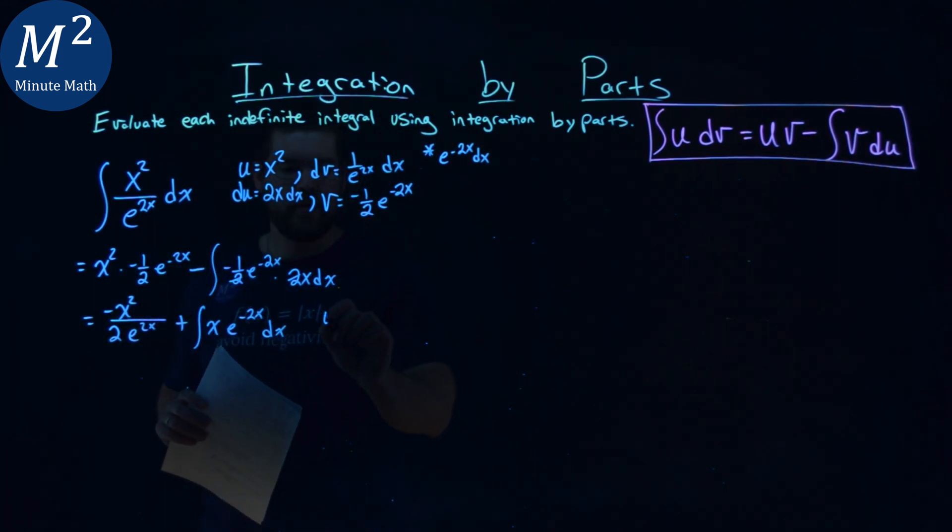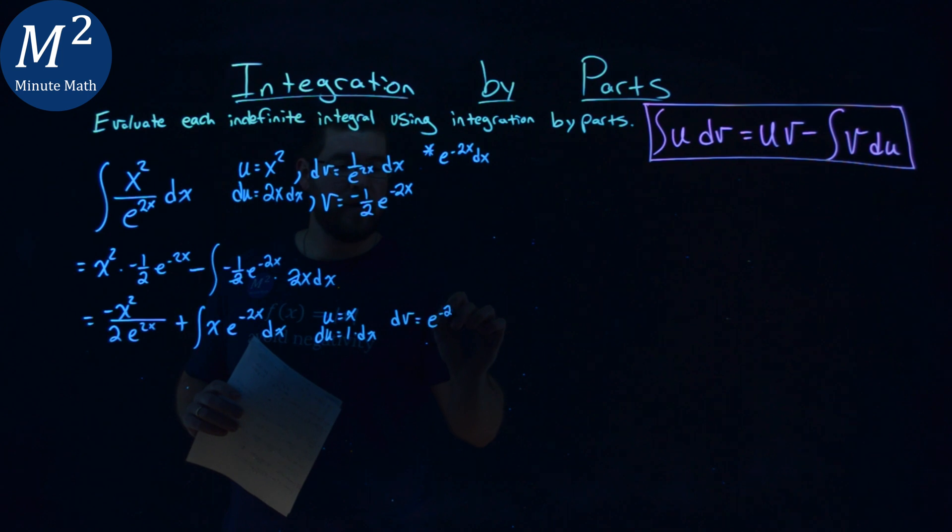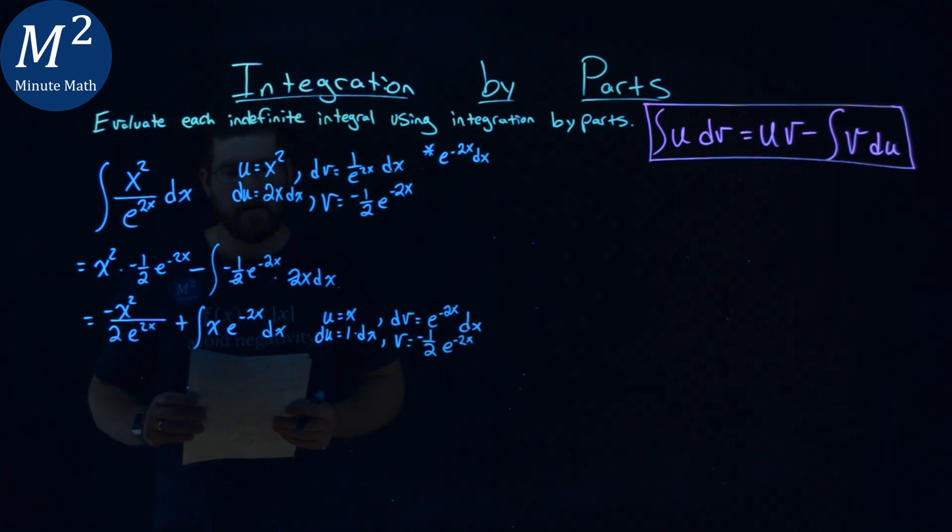So let's go set our u value to be x here, and that makes our du value to be 1 times dx. Pretty easy. Our dv value, the second part, again, is e to the negative 2x power dx, and that makes our v value something we've already found. It's the same thing, right? Negative 1 over 2, e to the negative 2x power.